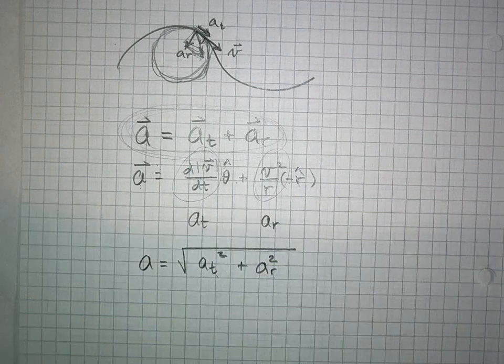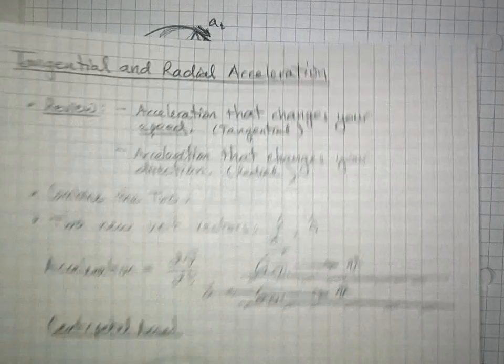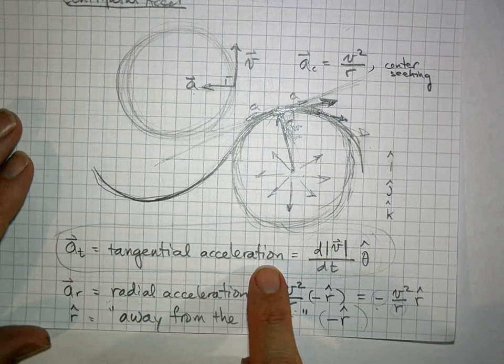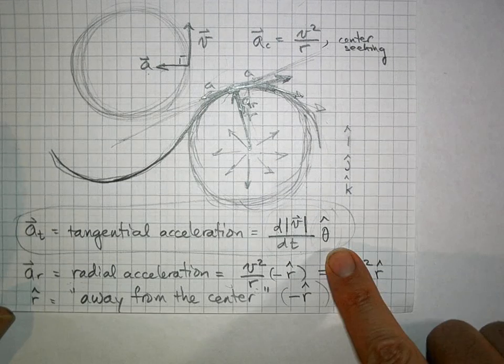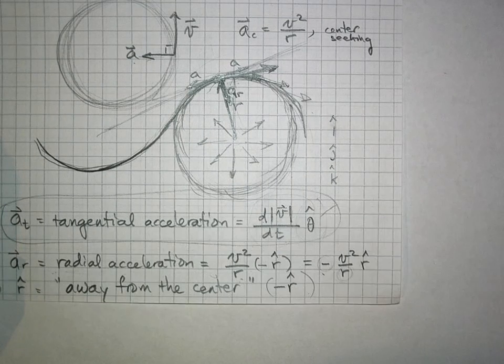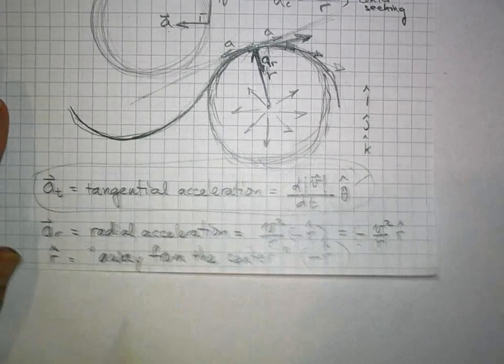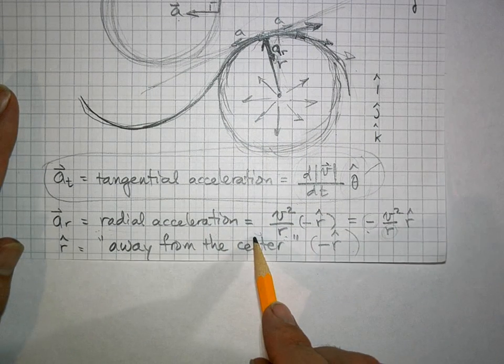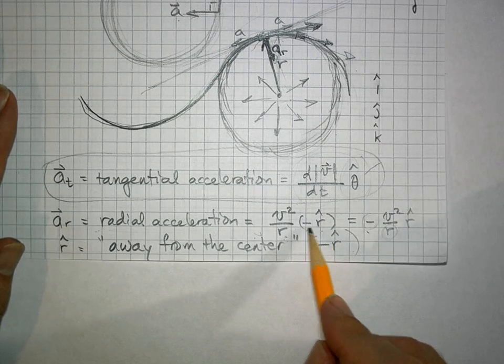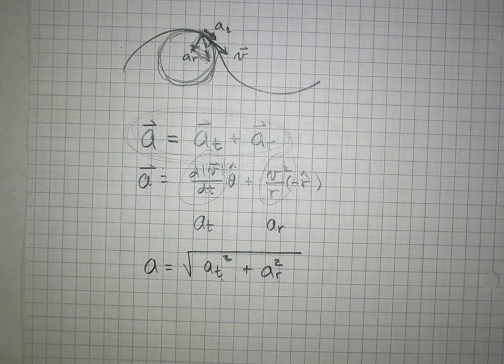To summarize: tangential acceleration changes your speed — it's the rate of change of speed in the theta-hat direction, tangential to the path. Radial acceleration, formerly called centripetal acceleration, changes your direction — it's v squared over r in the negative r-hat direction, toward the center of the turn. We can combine them to find the overall acceleration using vector addition.